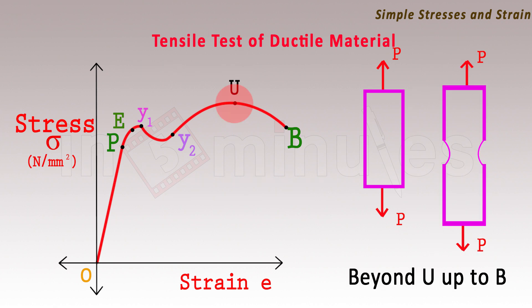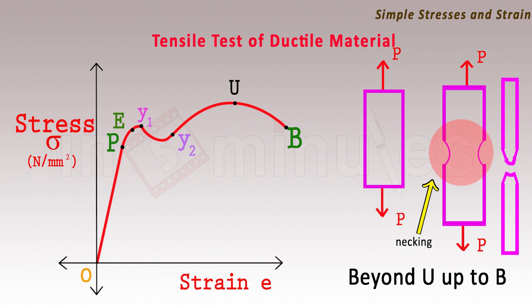Beyond point U, the ultimate tensile point, there is a localized reduction in the cross-sectional area at the weakest point of the material. This is called as necking, and it continues until the material finally breaks. Due to the reduction in cross-sectional area, the required load to further strain decreases, and eventually the material breaks into two pieces. The failure which takes place for a ductile material is called as cup and cone failure, meaning one piece of the broken specimen has a cup shape and another has a cone shape.